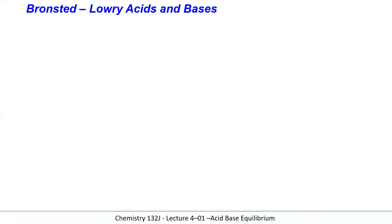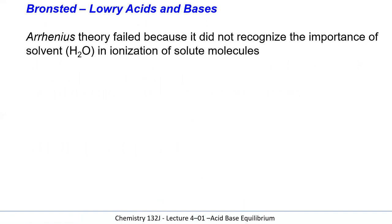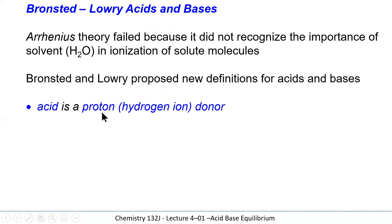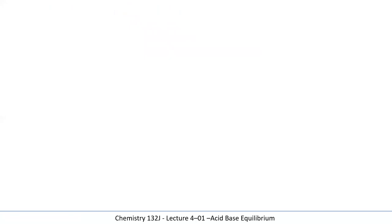Brønsted and Lowry, two other chemists, created a new explanation for what Arrhenius's theory could not explain. They created new definitions: an acid is simply a proton donor and a base is a proton acceptor.